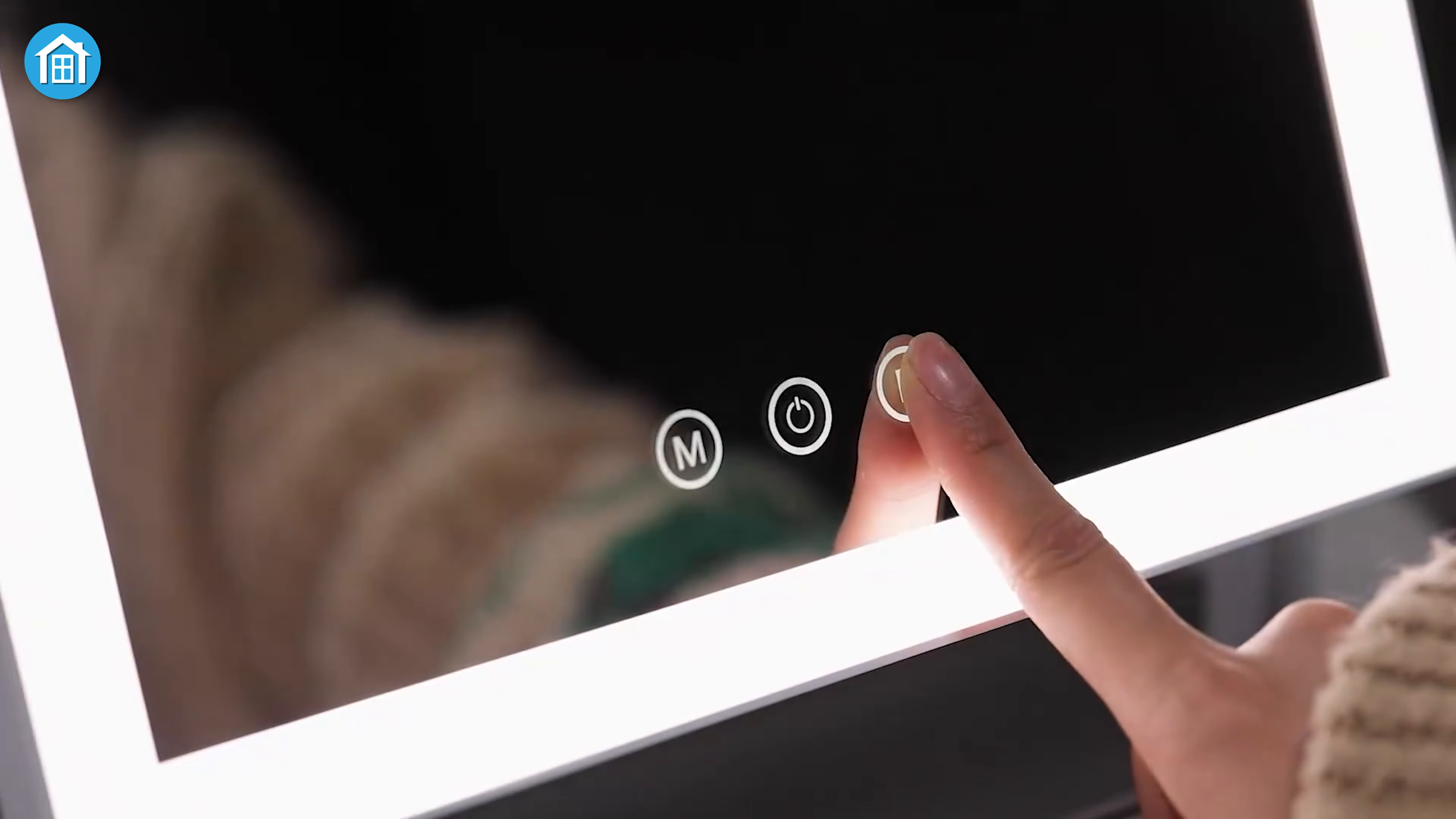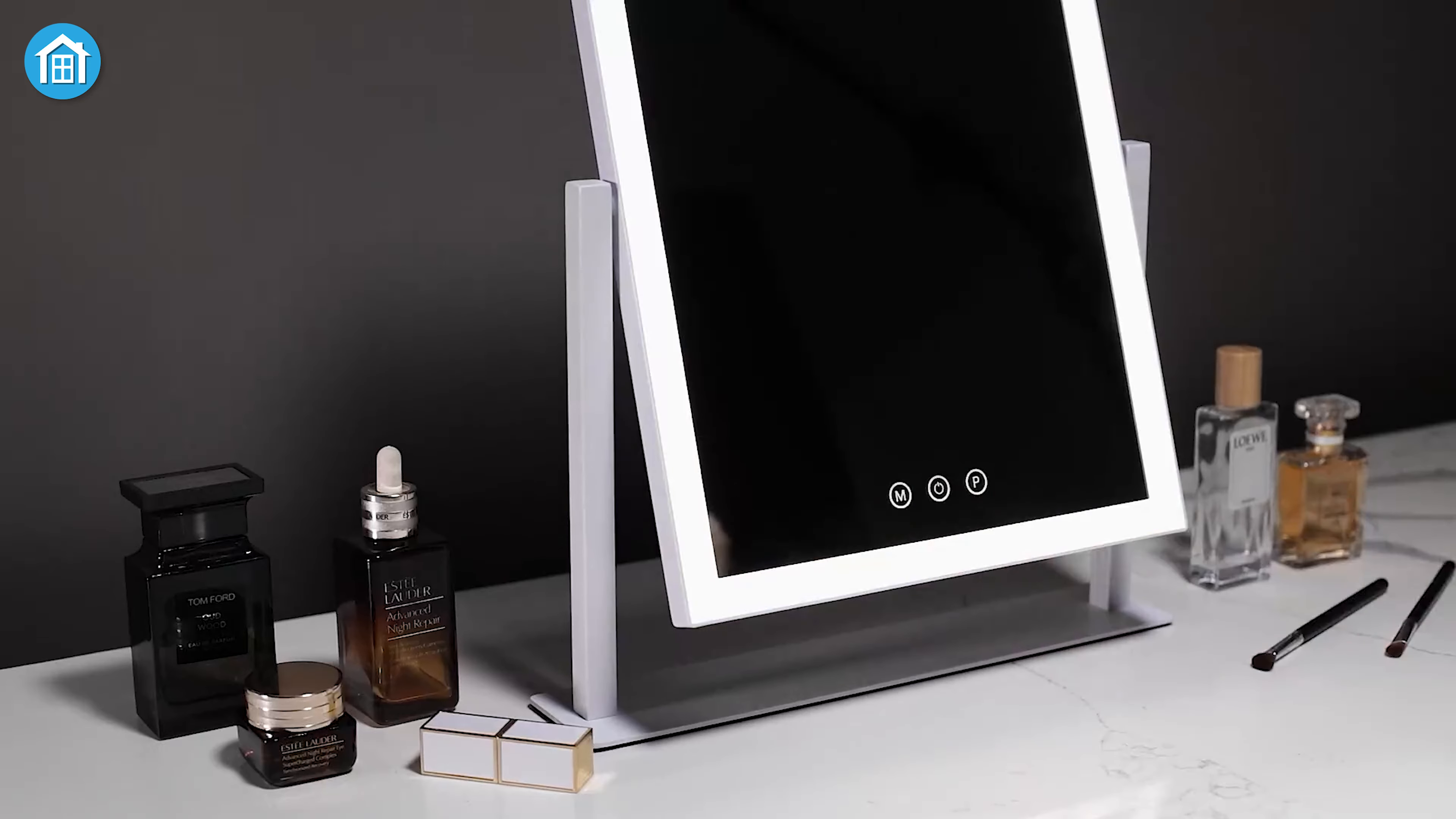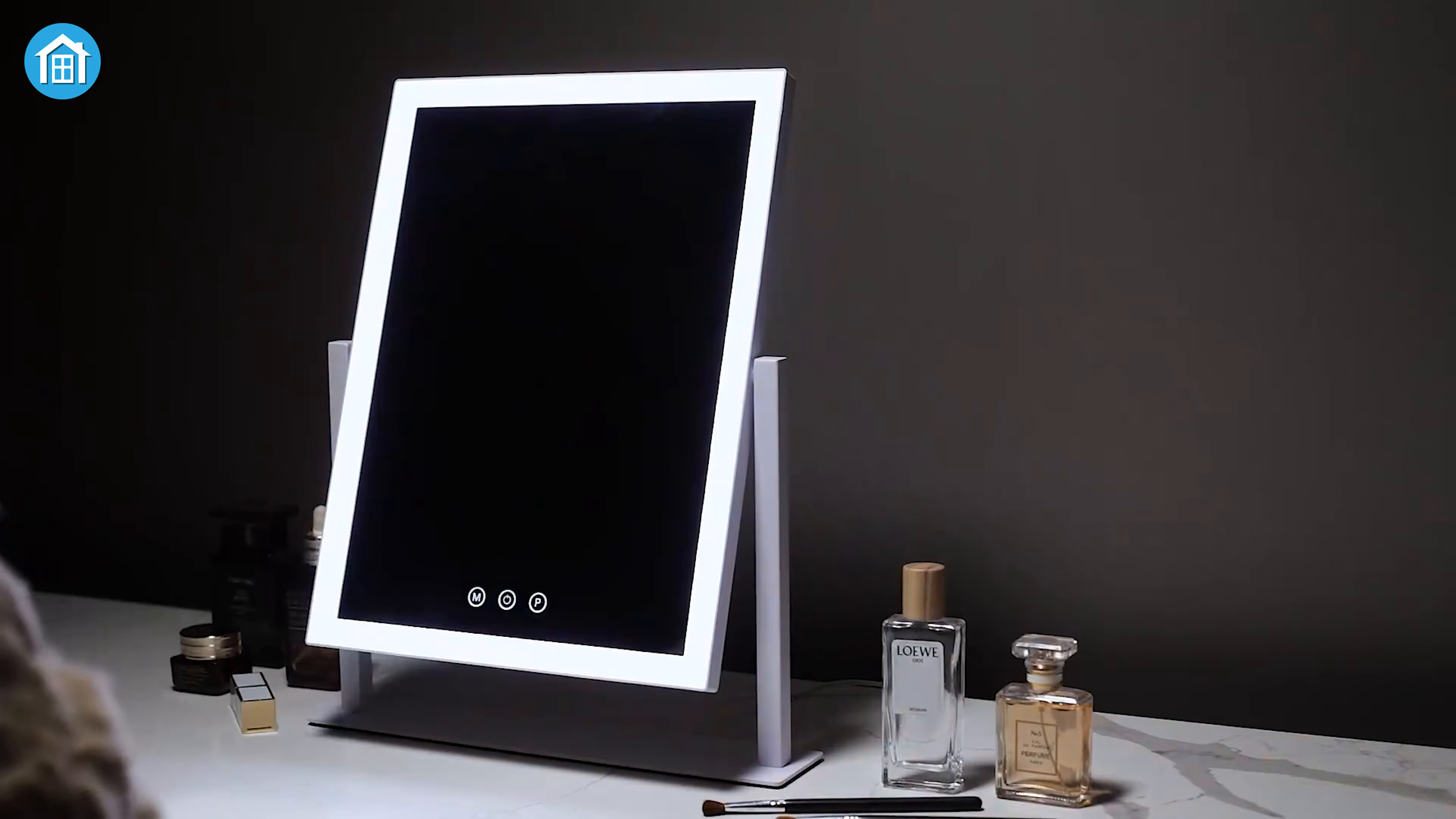With adjustable brightness, you can easily customize the lighting to suit your needs. The intuitive sensor switch makes it easy to control. A simple touch to light up, long-press the P button for brightness, and the M button to change lighting modes.